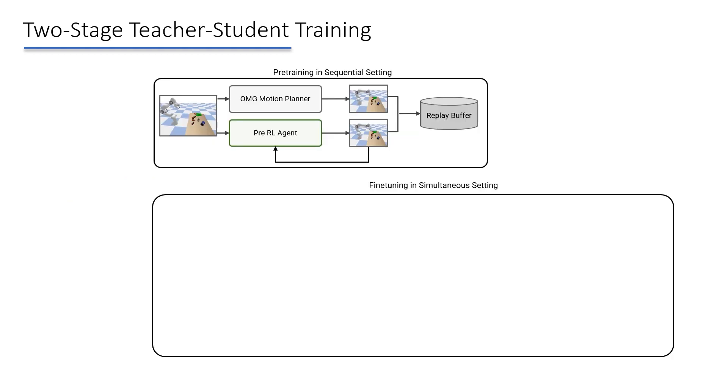In the second stage, we move to the more challenging setting where the human hand and the robot move at the same time. We cannot use open-loop motion and grasp planning in this setting anymore. Therefore, we replace the expert motion and grasp planner with the pre-trained policy from the previous stage and freeze its networks. We also initialize the RL agent with the pre-trained networks.